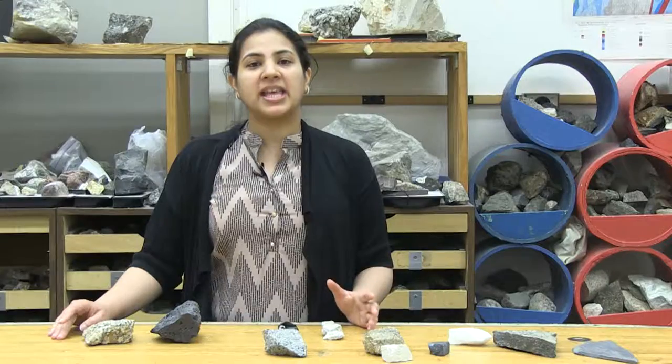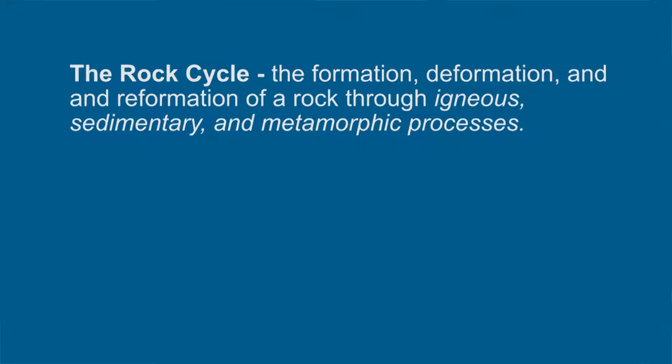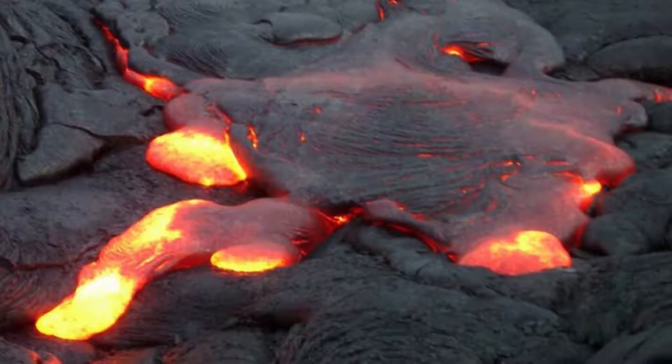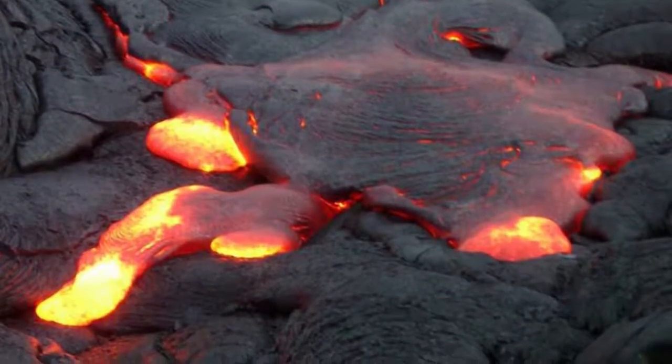A rock cycle is a model that describes the formation, deformation, and reformation of a rock through igneous, sedimentary, and metamorphic processes. The story of the rock cycle begins with igneous rocks, which are formed by cooling and solidification of molten hot material called magma.